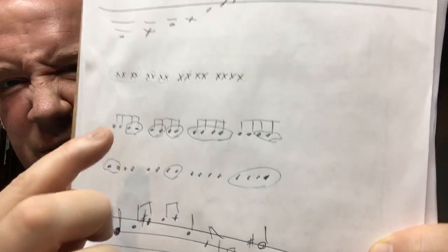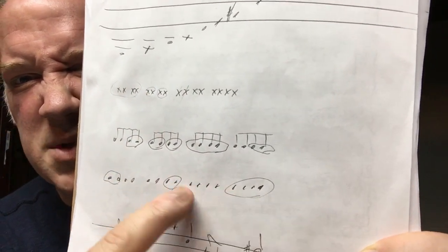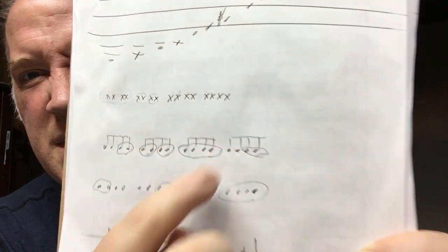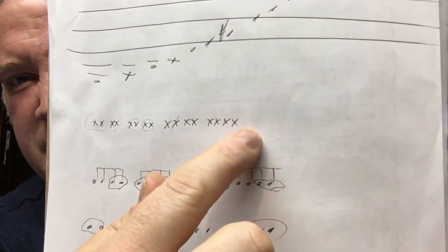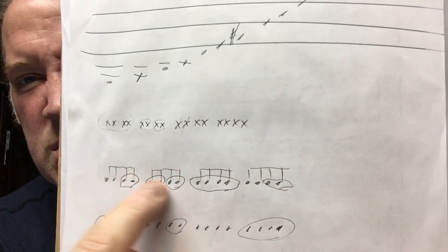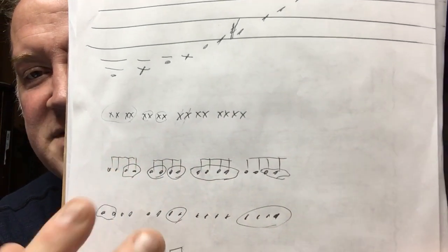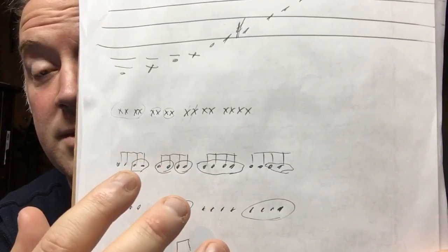What I want you to do is come up with at least three or four different variations of rhythms that you're going to create — just the rhythm. So you're going to make your stream of 16 notes, and then you're going to circle some of them. You can make some of them rests if you want and leave some uncircled. And that's going to give you your rhythm.